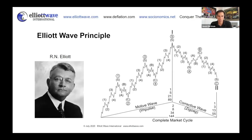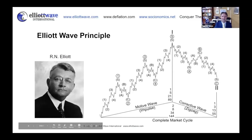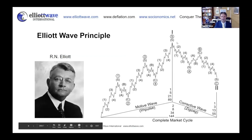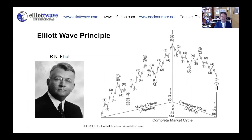A fractal means each pattern is a subset of a larger pattern. On this stylized diagram, wave one consists of five waves in circles one through five. That fifth wave itself consists of five waves in brackets one through five. So each pattern is a subset of a smaller and a larger pattern. The reason for that is the stock market is driven by human herding behavior, and those cycles repeat at every time scale.